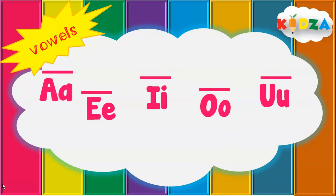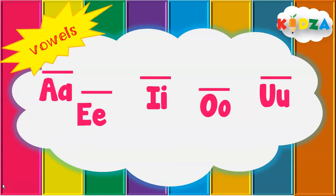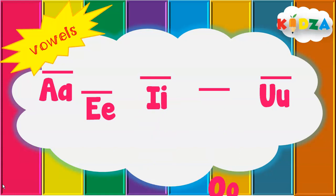Now let's look at long sound words. What is the long sound? The long sound vowels are the letters' names themselves. These long sound vowels are denoted with a sleeping line on top of the letter. Let's go through them: A as in A, E as in E, I as in I, O as in O, U as in U.